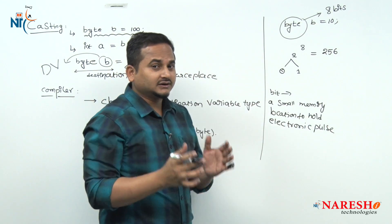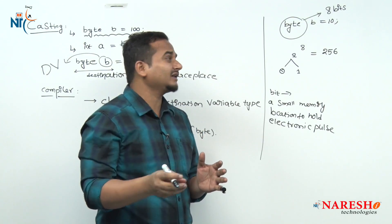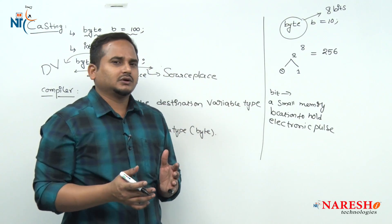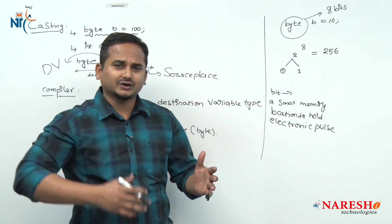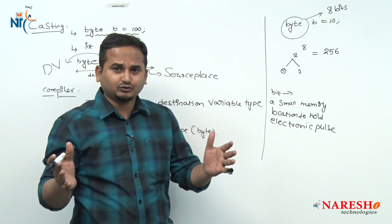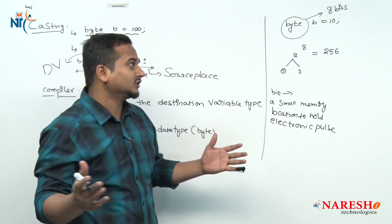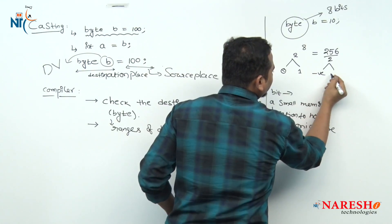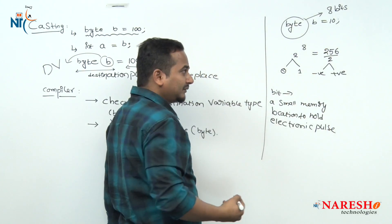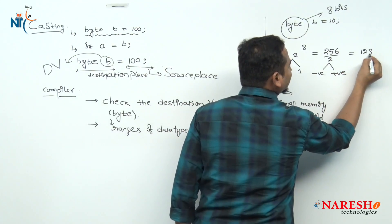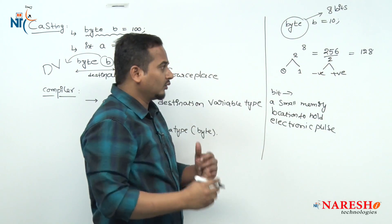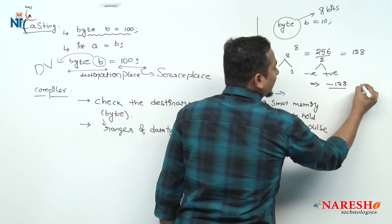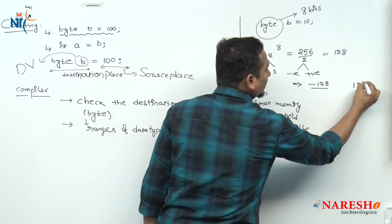That means the byte data type is going to hold 256 values. Whenever we talk about values, we need to consider positive as well as negative. So we have two parts — negative and positive. Let me divide by 2, so each part contains 128 digits. That means we have minus 128 digits as well as plus 128 digits.